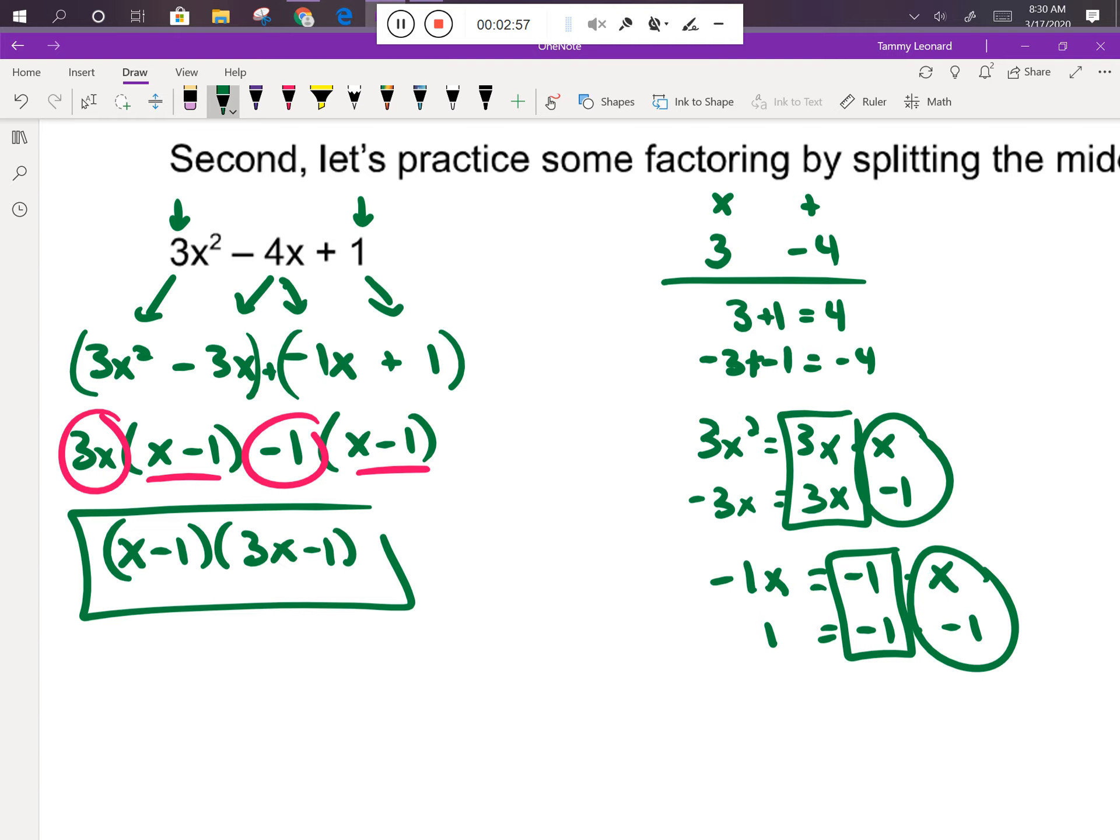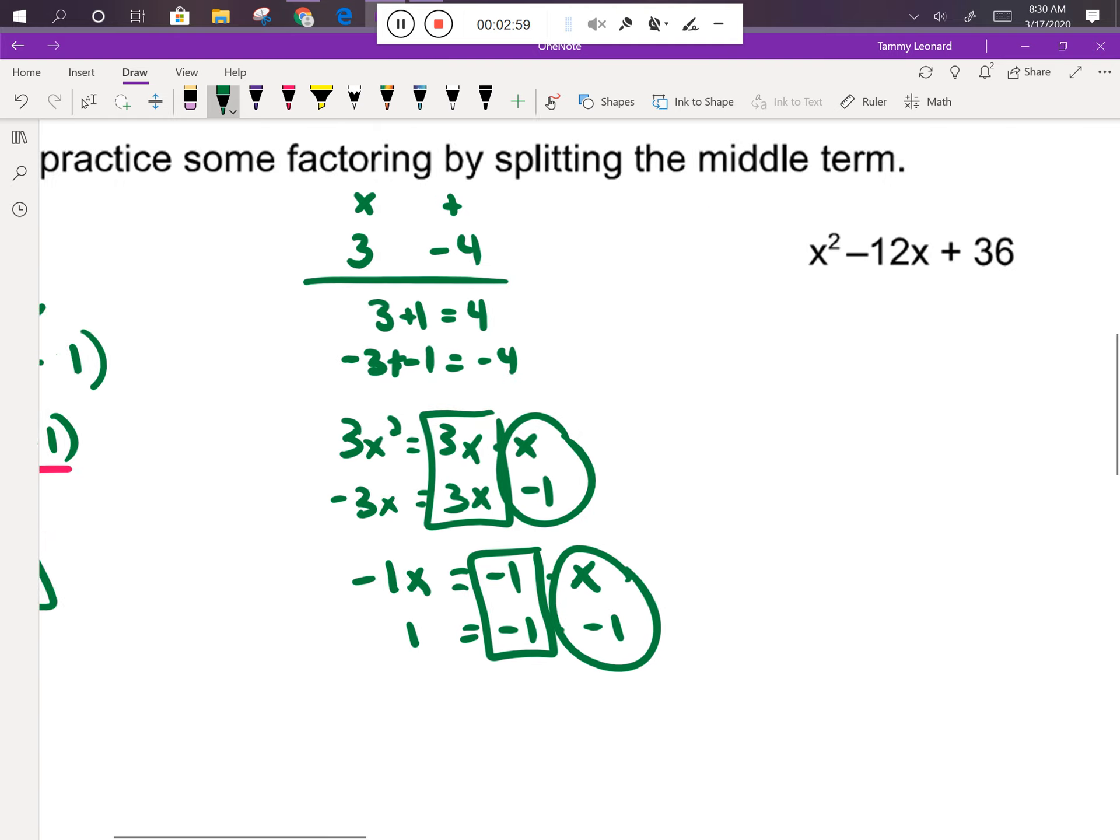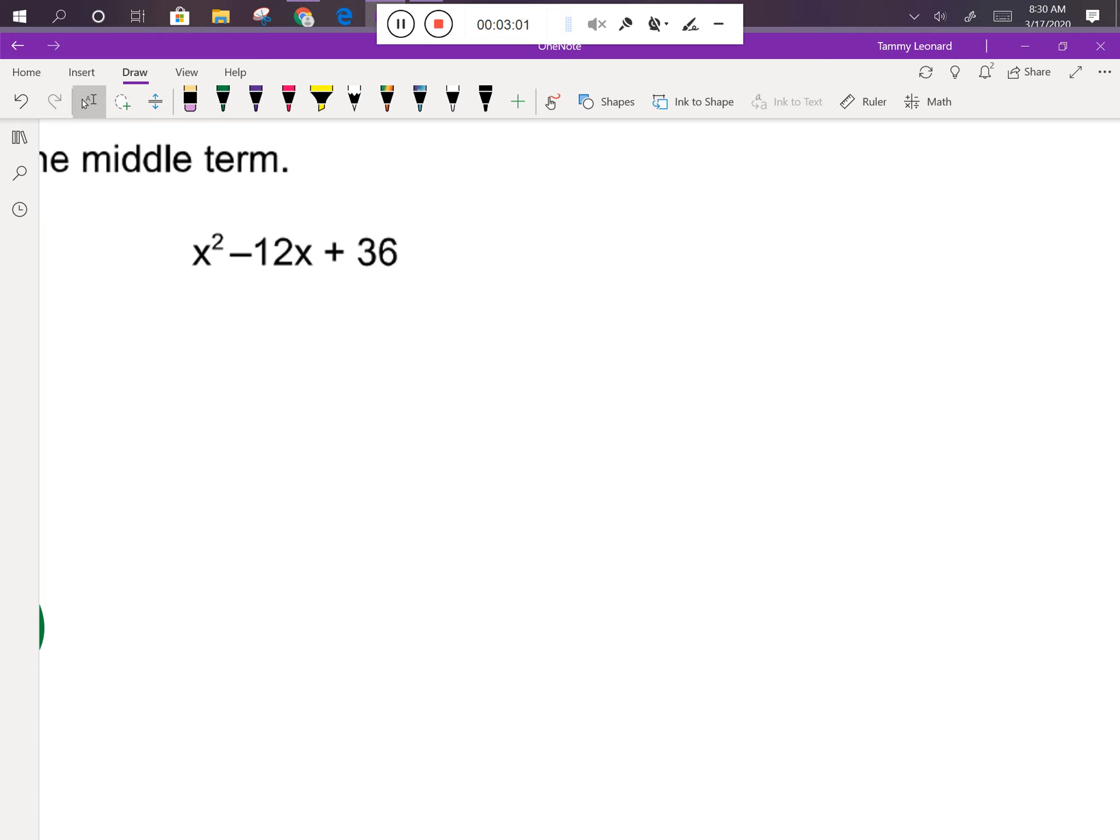Let's look at the problem off to the right. As I look at this, I don't see a number in front of x². Remember if I don't see a number, it means I have one of them. So when I go to set up my puzzle, I'm saying what multiplies to make 1 times 36, which is 36, and what adds to make -12.